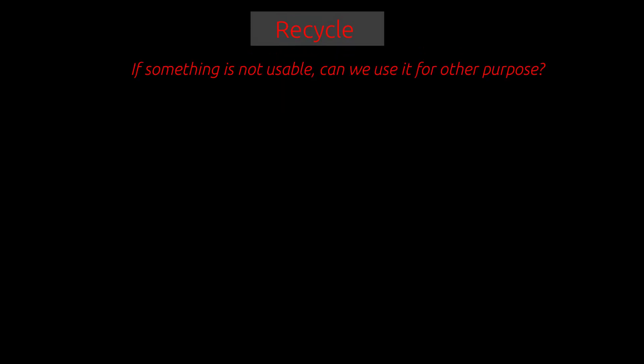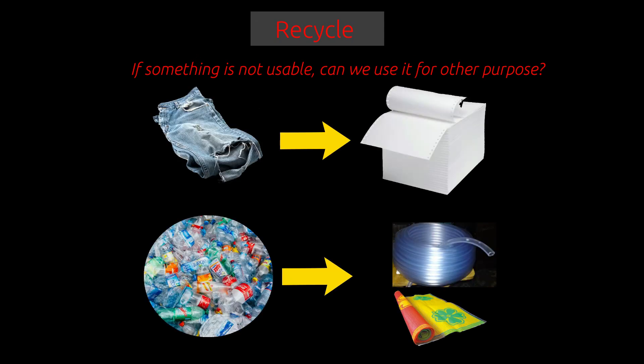If something is not usable, can we use it for another purpose? The process by which waste materials are used to make new products is called recycling. Using old clothes to make paper, and melting some plastics to make floor mats, plastic boards, and hose pipes are examples of recycling.